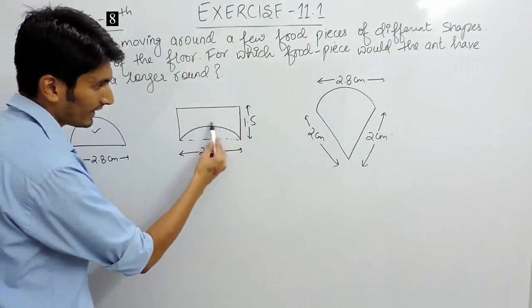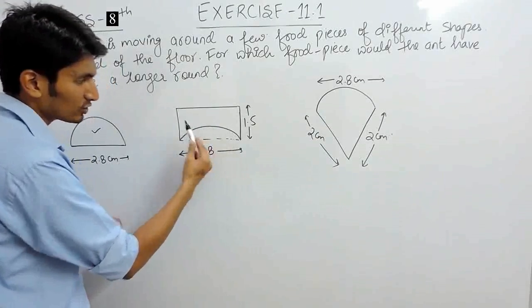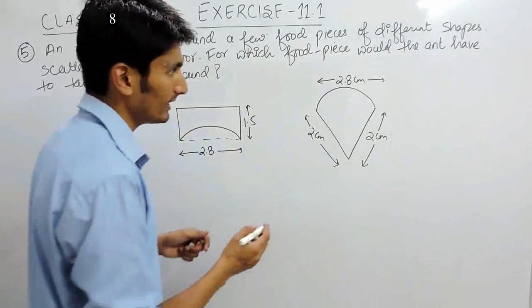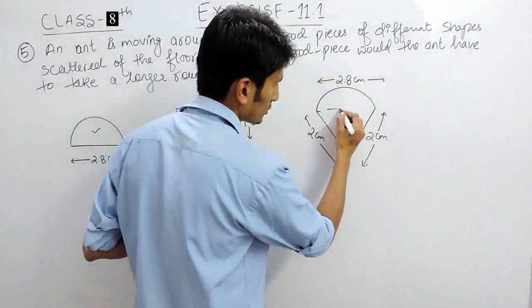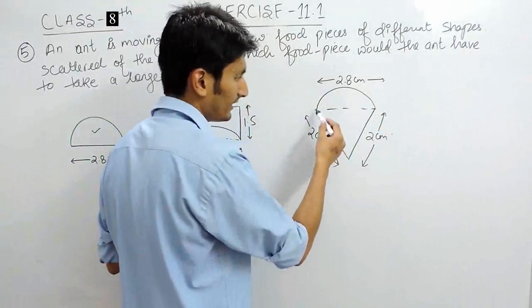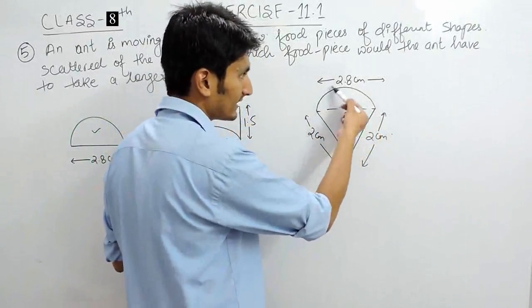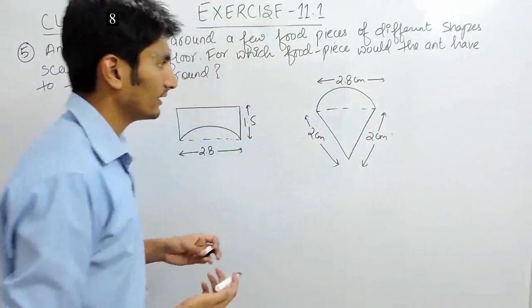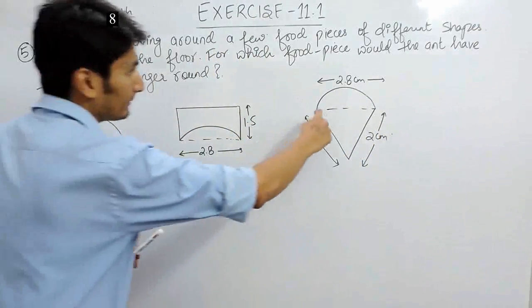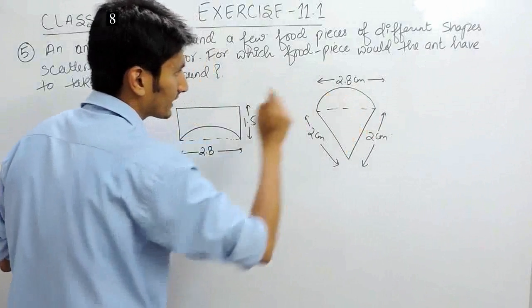is again a semi-perimeter and this is half circumference of this circle. Similarly, in this case also, you have to find this length plus this length and this semi-circumference of this circle.